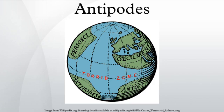Geographically, the Antipodes of Britain and Ireland are in the Pacific Ocean, south of New Zealand. This gave rise to the name of the Antipodes Islands of New Zealand, which are close to the Antipodes of London at about 50°S 179°E. The Antipodes of Australia are in the North Atlantic Ocean, while parts of Spain, Portugal, and Morocco are antipodal to New Zealand.